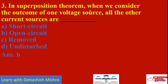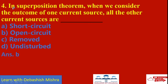In superposition theorem, when we consider the effect of one voltage source, all other current sources are open circuit. So the answer will be (b): open circuit. Current source means open circuit; voltage source means short circuit. Remember this point. So answer will be (b).